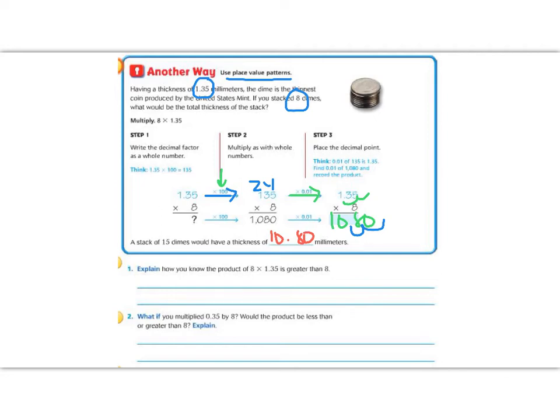Question number 1. Explain how you knew that the product of 8 times 1.35 is greater than 8. Well, I know if I'm multiplying 8 times 1, it's going to equal 8. And it's not 1, it's 1.35. So 1.35 is greater than 1. So my answer of 1.35 times 8 had to be greater than 8.